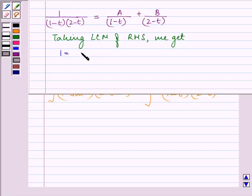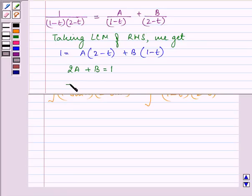Taking the LCM of the right hand side and equating the numerator, we have 1 is equal to a into 2 minus t plus b into 1 minus t. We have 2a plus b equal to 1 and minus a minus b equal to 0.